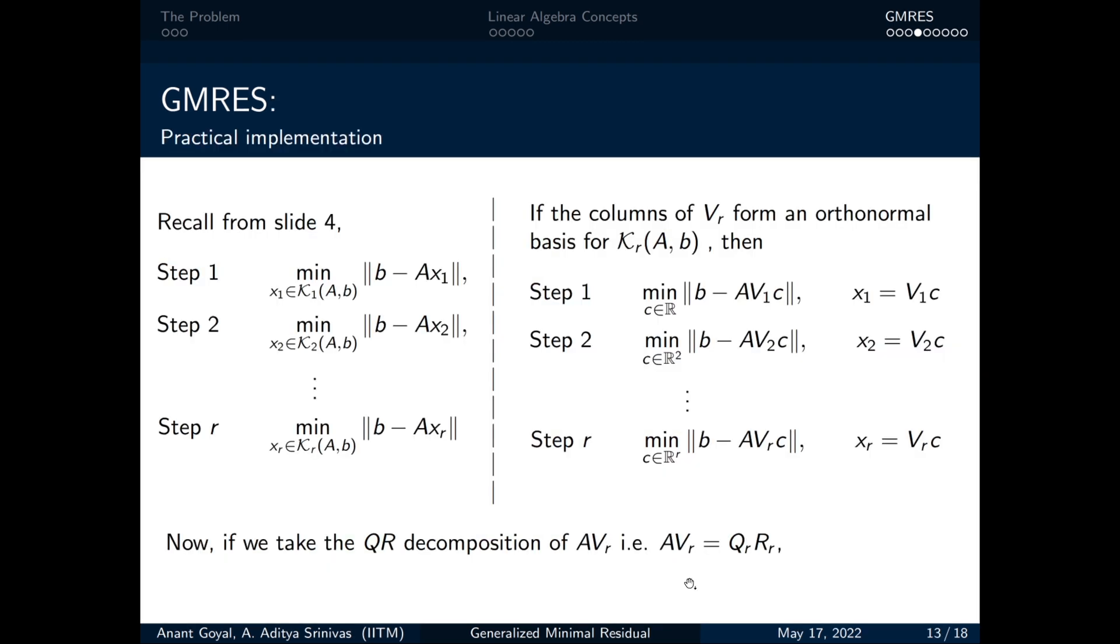That was all about theory. Let's see how to implement the algorithm. From slide 4, the introduction to GMRES, we know GMRES calculates the best least square error solution at the rth step from the Krylov subspace which we can write mathematically as the step shown on the left.